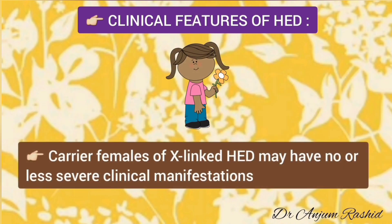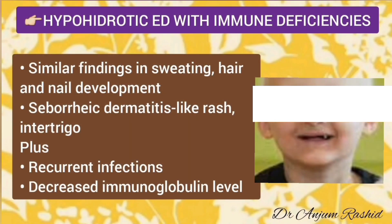Carrier females of the X-linked type of hypohydrotic ectodermal dysplasia may have no or less severe clinical manifestations. The fourth type — hypohydrotic ectodermal dysplasia with immune deficiency — has similar findings in sweating, hair, and nail development, along with seborrheic dermatitis-like rash and intertrigo, plus decreased immunoglobulin levels leading to recurrent infections.